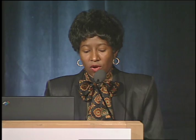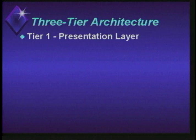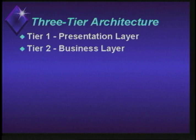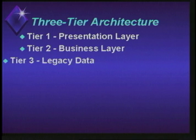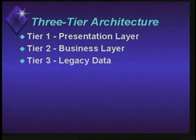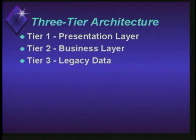One solution to the two-tier model is a three-tier architecture, where the client tier is divided into two. Tier one has the presentation layer — essentially the graphical user interface and some essential application logic. Tier two contains the bulk of the application or business logic at the server. Tier three has the legacy data systems and data management. This three-tier architecture has been recently proposed to address the software manageability problems of the traditional two-tier client-server model.